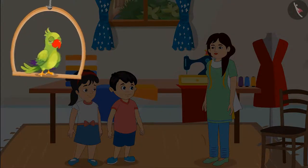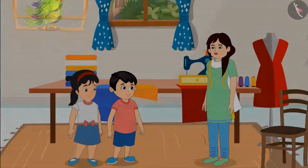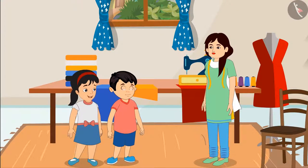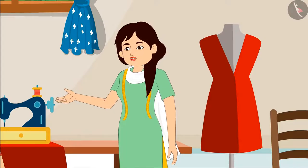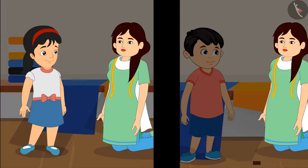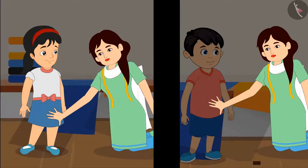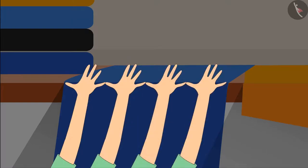Chotu and Pinky have to get their clothes stitched, so they have come to the tailor shop. They say: Aunty, we have to get these clothes stitched for us. Aunty replies: Ok kids, I will take your measurements now. Aunty takes Chotu's and Pinky's measurements by hand, and she is also measuring clothes using her handspan.